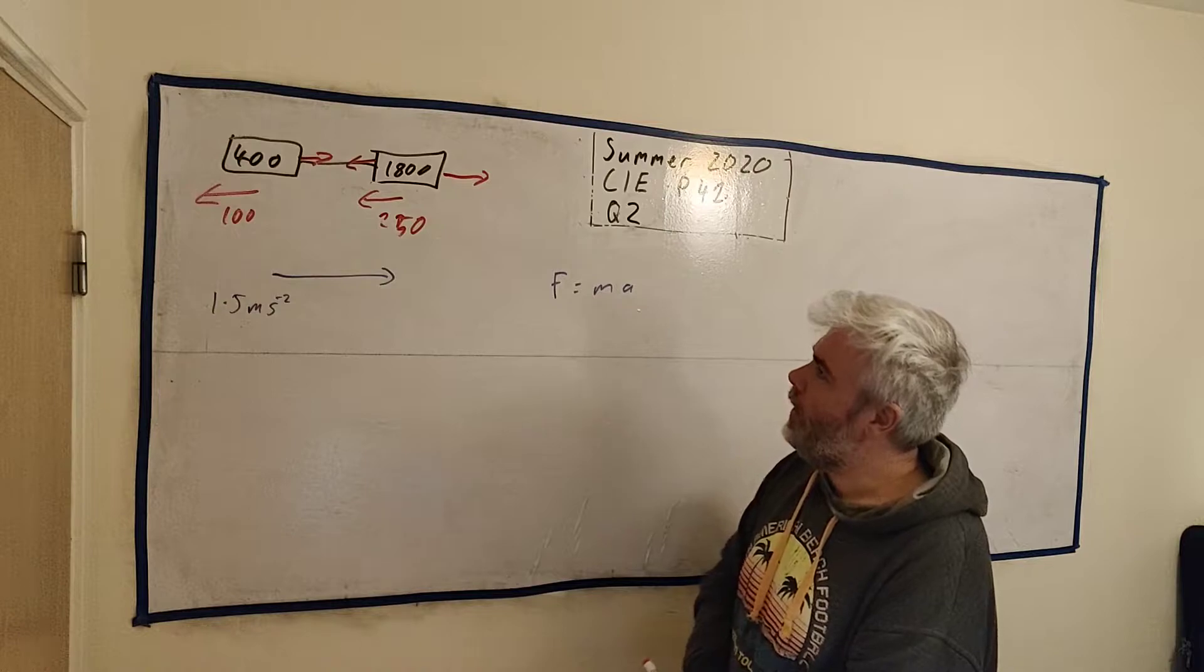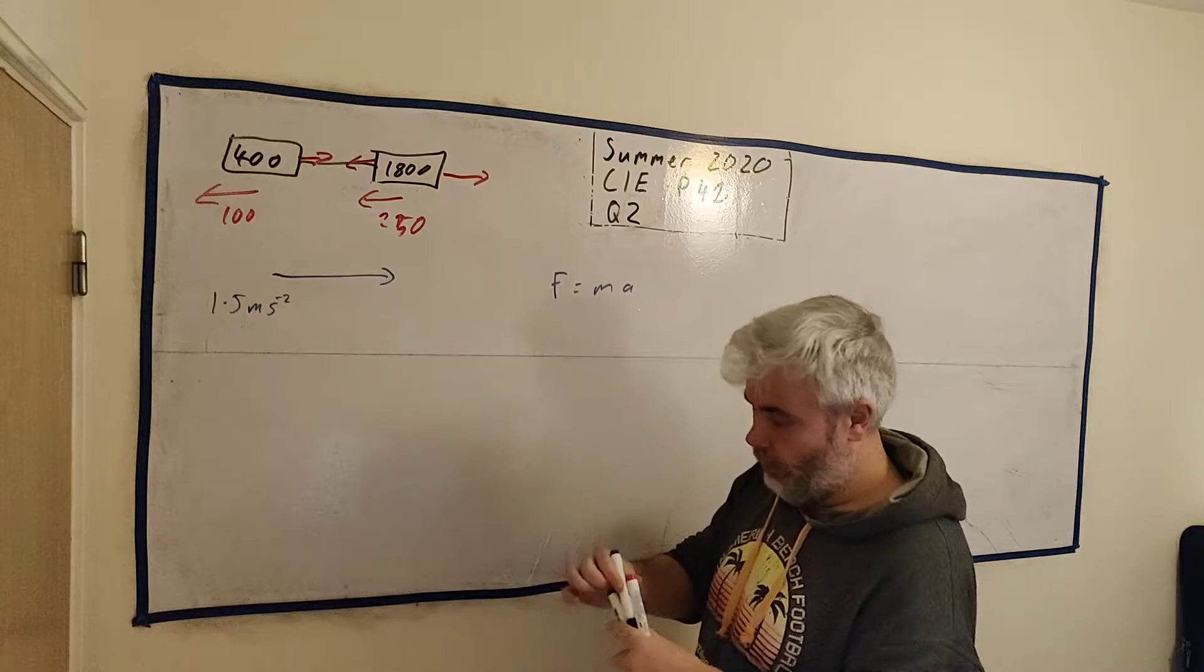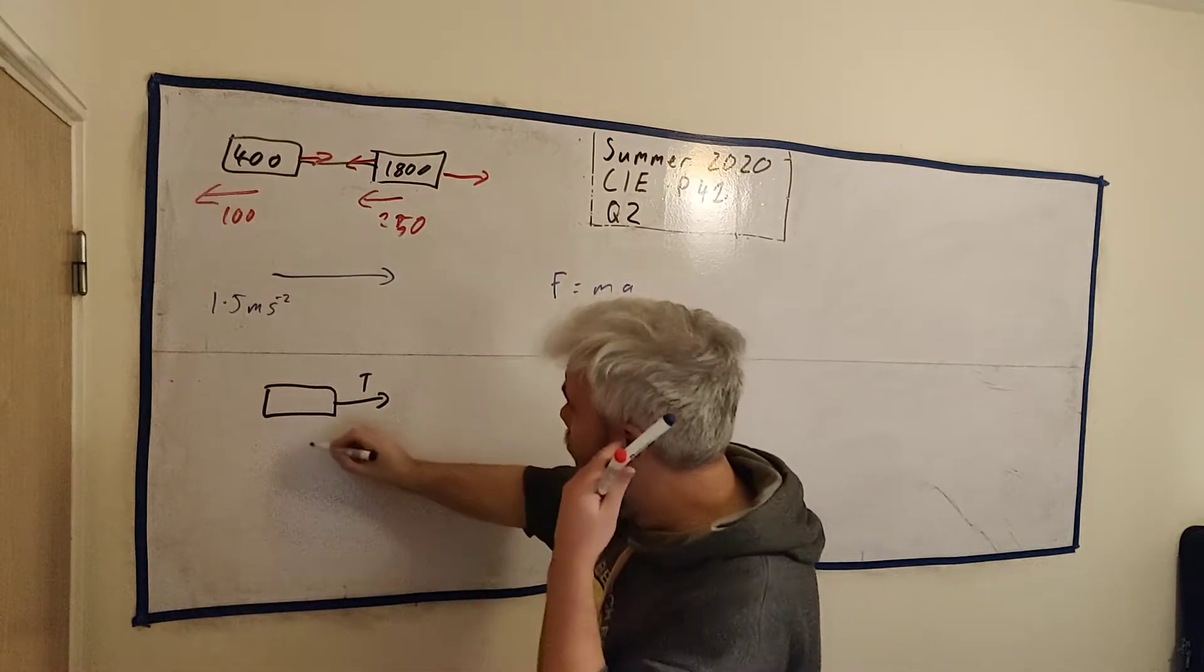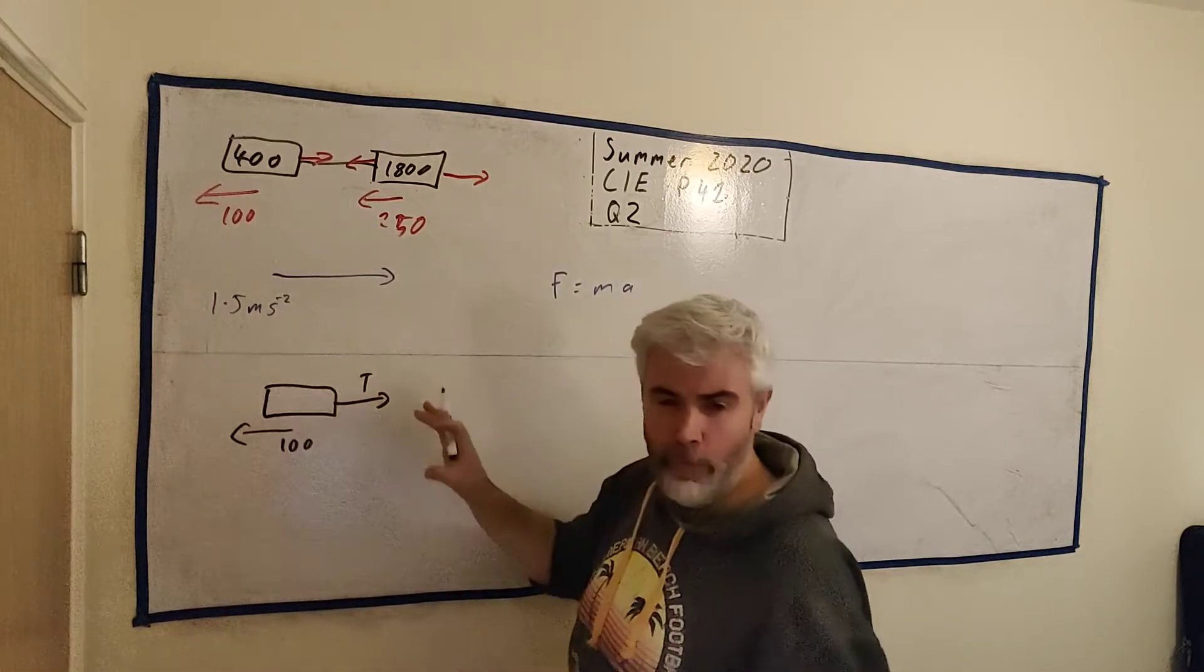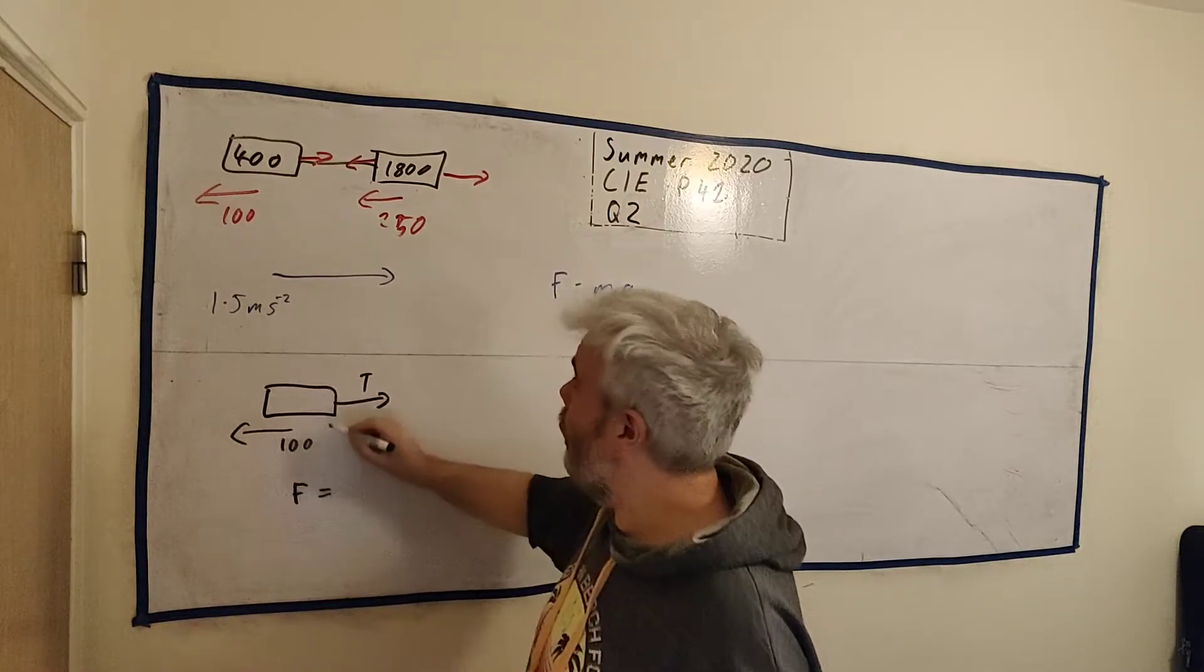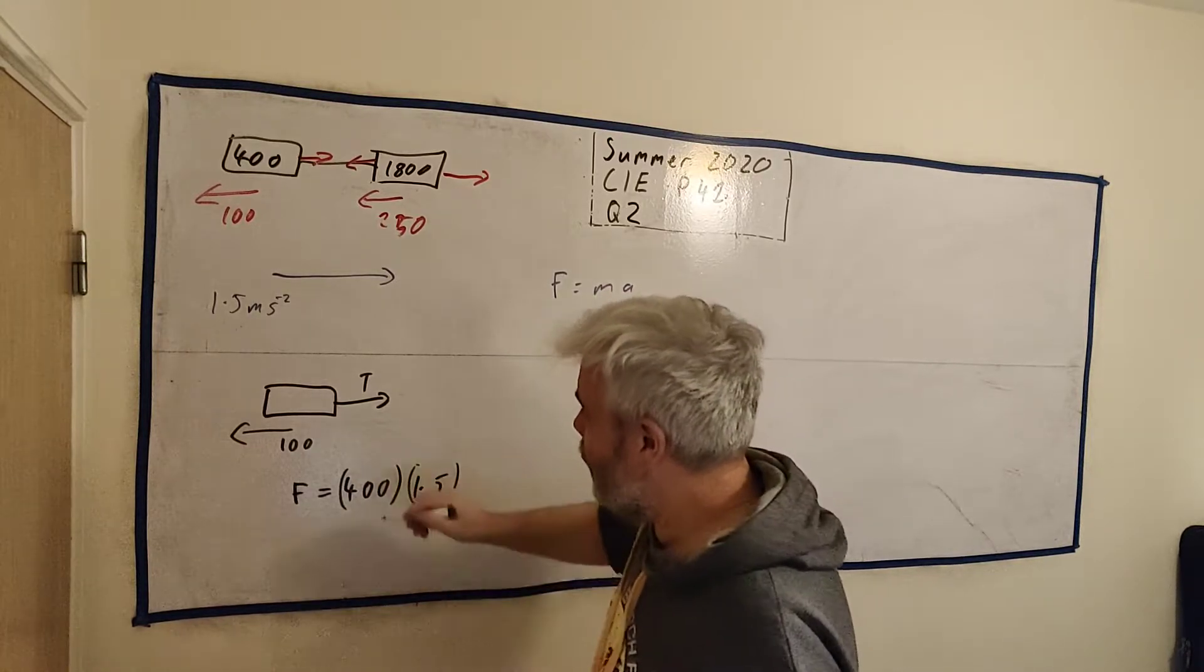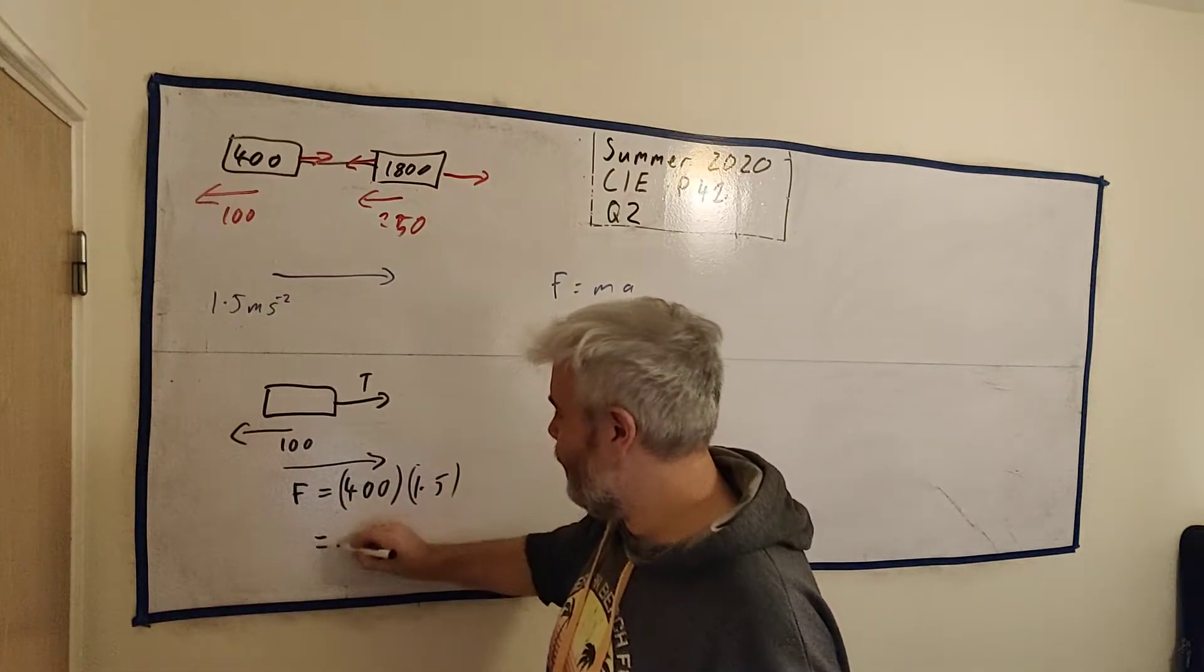We only need to look at each of these separately. We could look at these in its own little world. So I'm going to draw it again. Here's just the trailer. We have a force here, T. We have 100 newtons going this way. And overall, I know these two add together to make an overall force of F. F equals 400 multiplied by 1.5. So I know there's an overall force here like this. And 400 by 1.5 is 600.